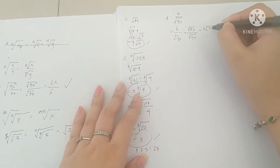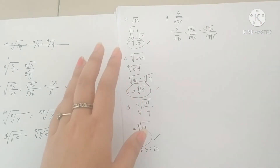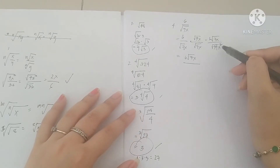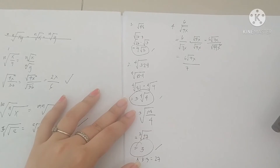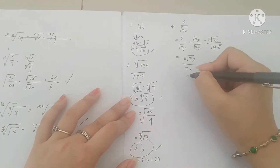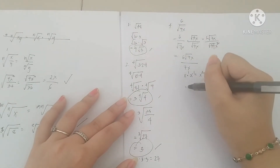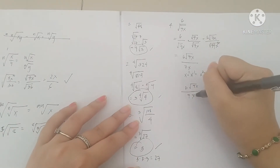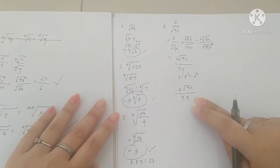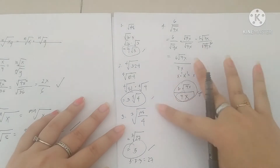So we get 6 times square root of 7x over square root of 49x squared. Square root of 49 is 7, since 7 times 7 is 49. And square root of x squared is x. So the denominator becomes 7x. Our result is 6√(7x) over 7x. The denominator is no longer in radical form, and the expression cannot be factored further, so 6√(7x) / 7x is our final answer.